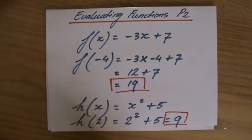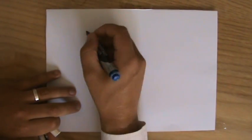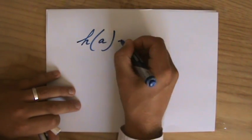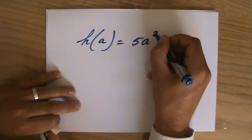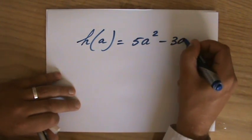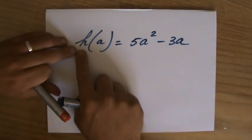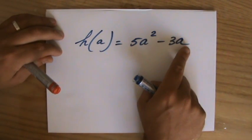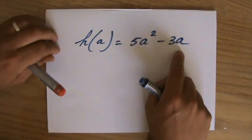Now perhaps if I can just say one more thing. Perhaps if you have a really funny teacher, he's going to say something like h(a) = 5a² - 3a, which means the function where a is the variable, 5a² - 3a. And as you can see, a is the variable.